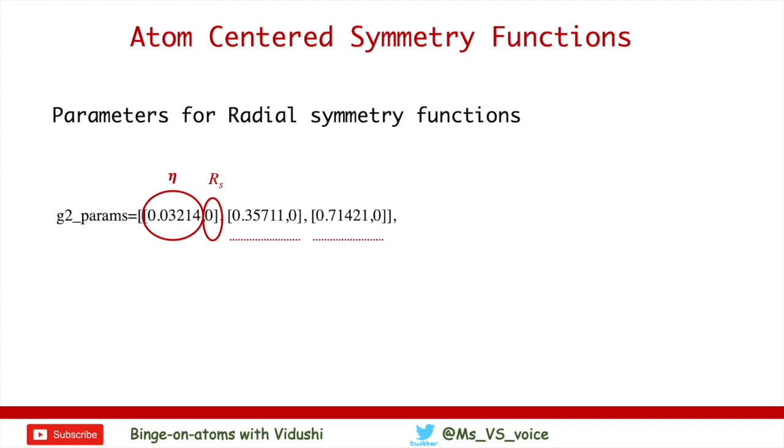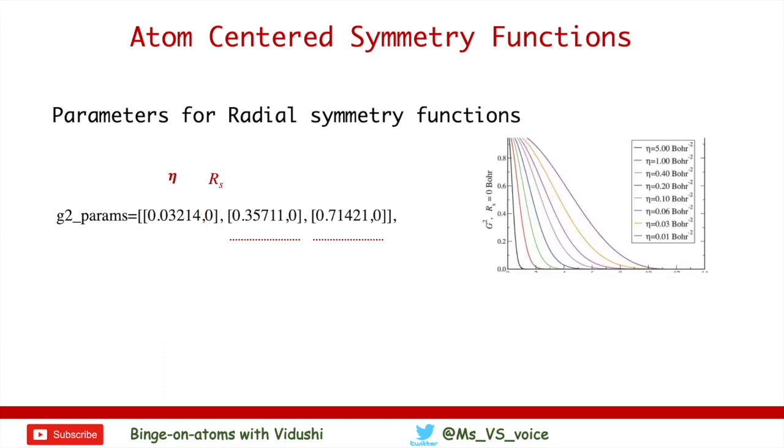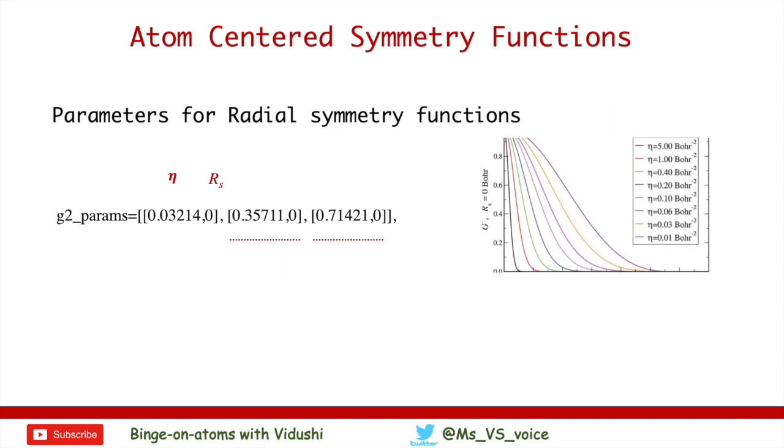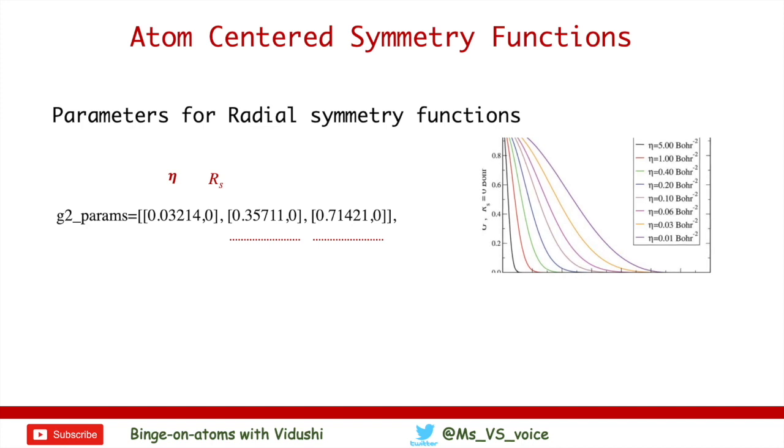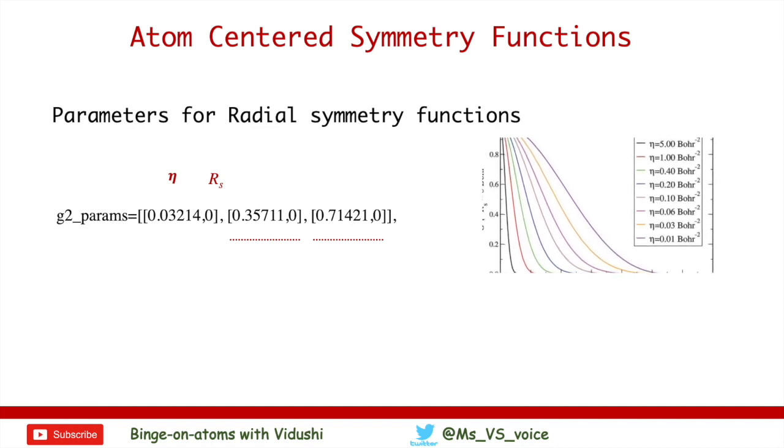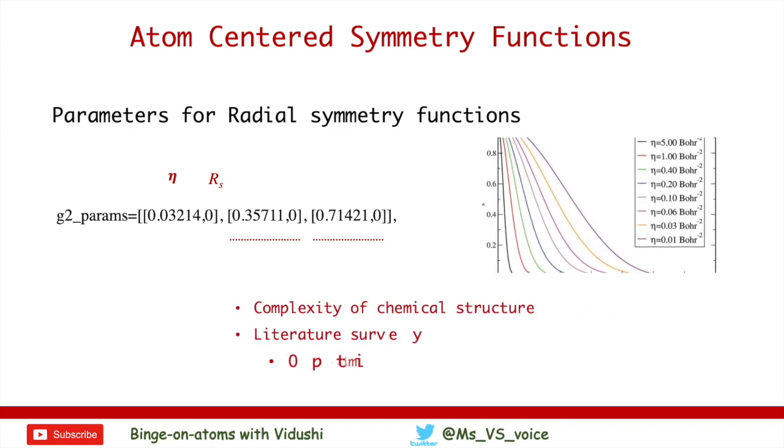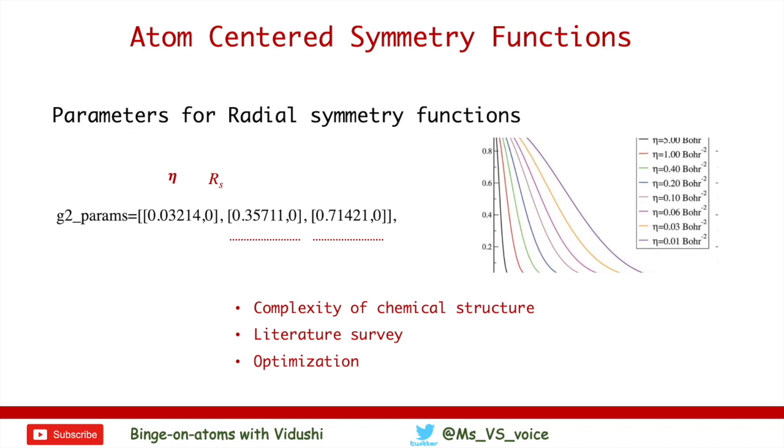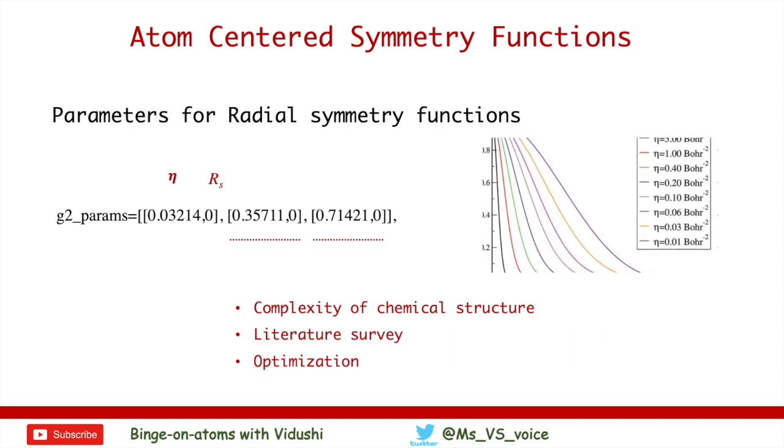Well, for complex systems, it is difficult to guarantee success with just one radial function. So it is advisable to write many parameters for complete description of chemical space. As you can see, different eta values will provide different coverage of chemical space. So we write multiple sets of parameters for each system. Here, for example purposes, I have given just three. But you can actually choose this based on your structure, literature survey, and optimization results. Now the same goes for eta values. You have to find the optimum eta value for your structure by thorough literature survey and optimization.